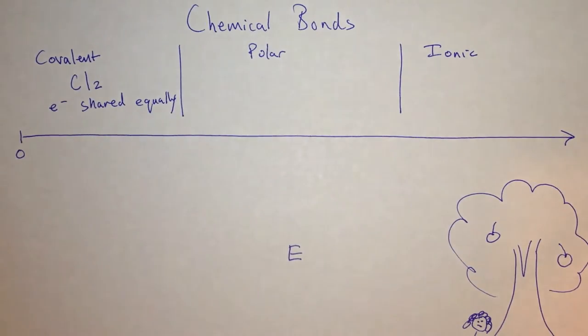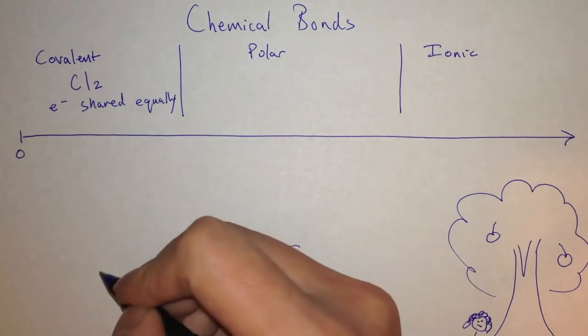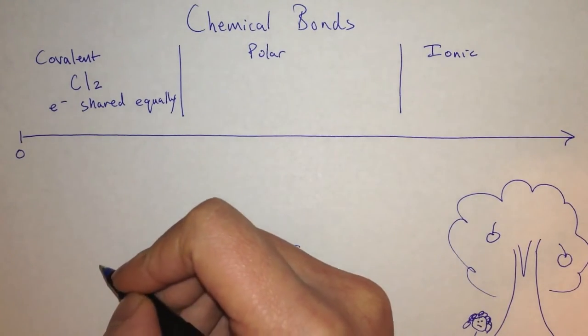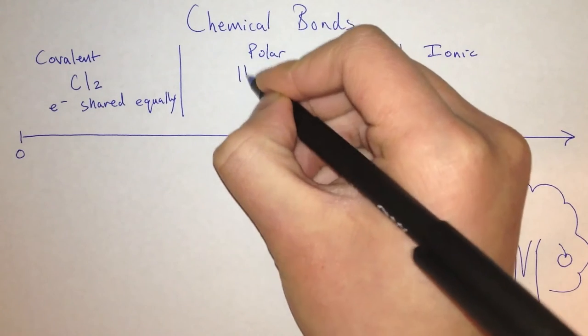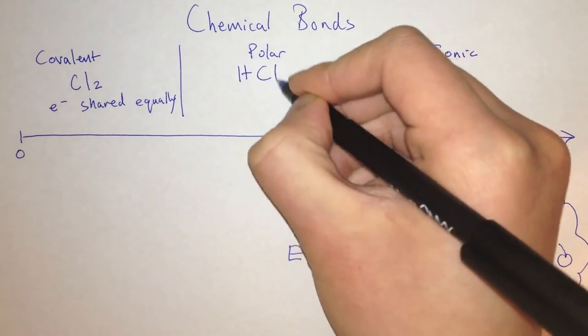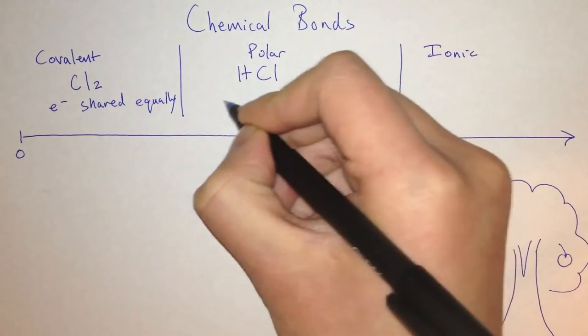In a polar covalent bond, the electrons are shared unequally. For example, HCl.